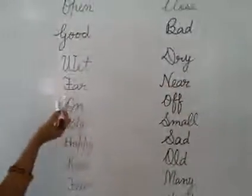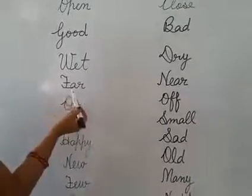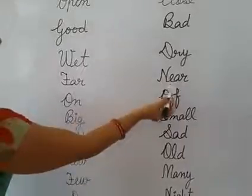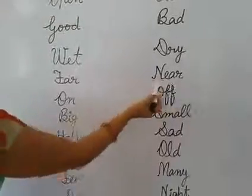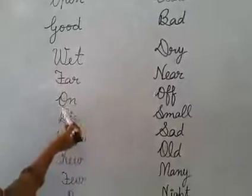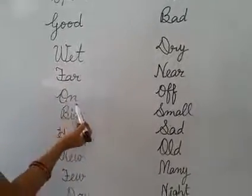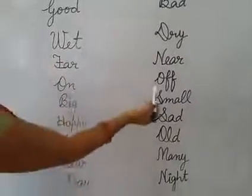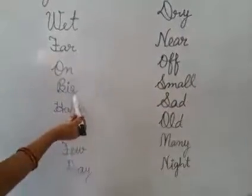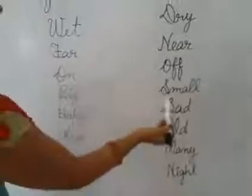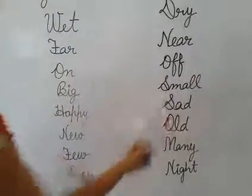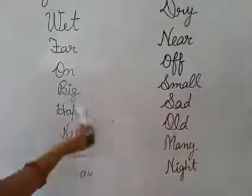Next. Say with me: F-A-R. Far. N-E-A-R. Near. Far. Near. Next: O-N. On. O-F-F. Off. B-I-G. Big. S-M-A-L-L. Small. Big. Small.